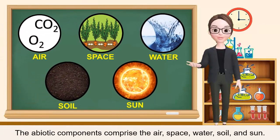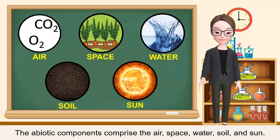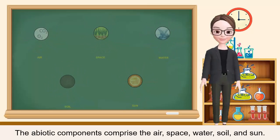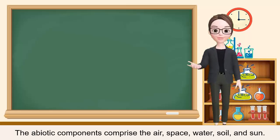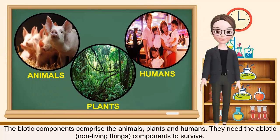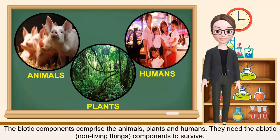These are the abiotic components of the environment: air, space, water, soil, and sun. The biotic components comprise the animals, plants, and humans. They need the abiotic or non-living things to survive.